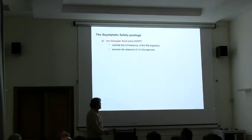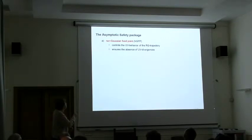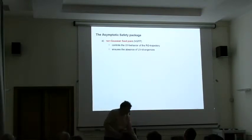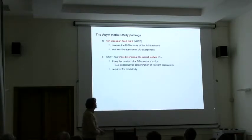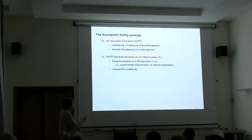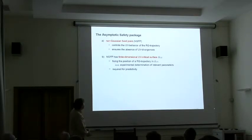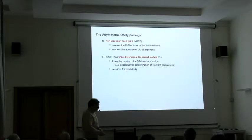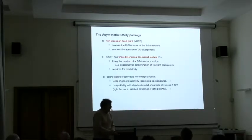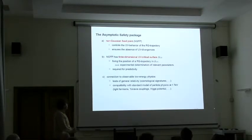The asymptotic safety package, what do we need? First we need a fixed point of our RG flow which controls the theory at very high energies. In this way we can get rid of UV divergencies. Then we want the construction to be predictive. This is encoded in the properties of this fixed point. Essentially we want to have a situation where only a finite dimensional set of RG trajectories approaches the fixed point as we go to very high energies. Then we can pinpoint the trajectory in the surface by doing a finite number of measurements, and from that we can predict actually an infinite number of coupling constants.